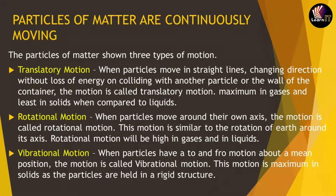We have now moved to the last segment of this topic, which discusses how particles of matter are in continuous movement and the kinds of motion involved. The particle of matter shows three different types of motion. The first is known as translatory motion — when a particle moves in a straight line, changing direction without loss of any energy on colliding with other particles or the wall of the container. This motion is maximum in gaseous form and least in solid form.